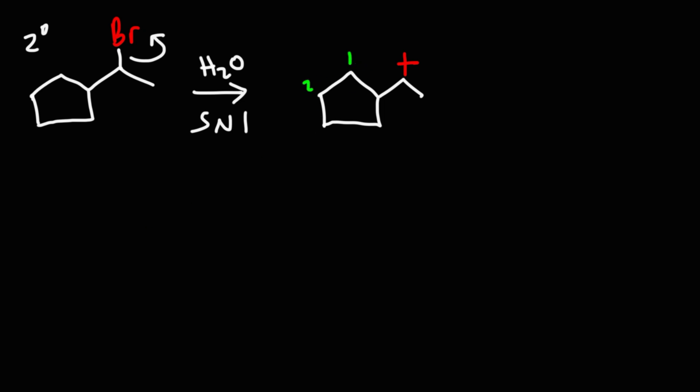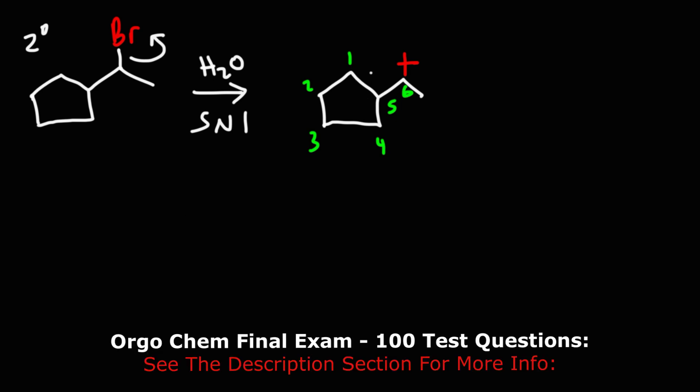Let's label the carbon atoms: carbon one, two, three, four, five, and six. The bond between carbons one and five will break — you could also break between four and five and get the same answer. When the bond between carbons one and five breaks, those electrons are going to be used to connect carbons one and six.